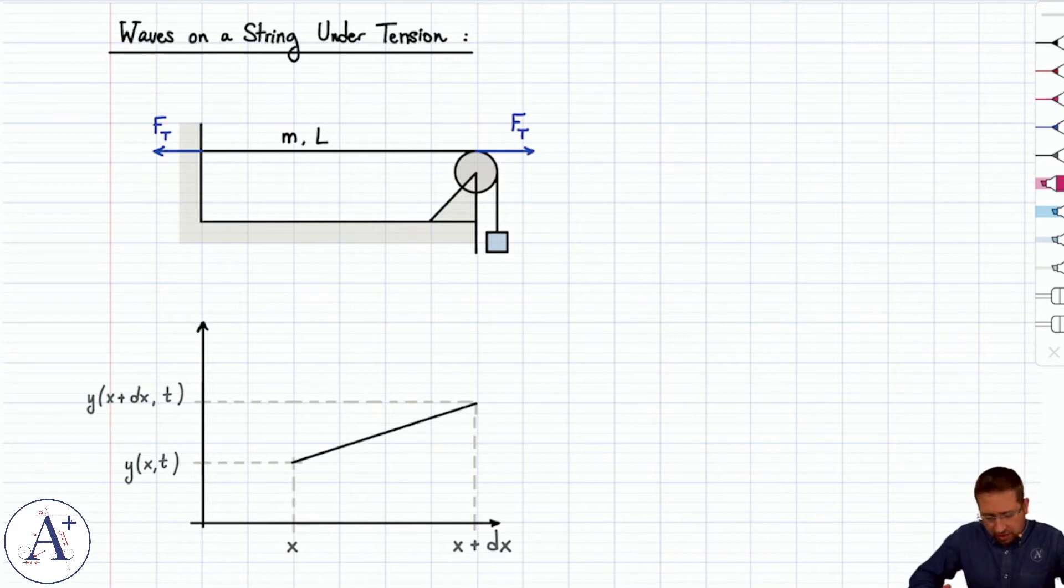We'll do that by taking a string of mass m, length L, and putting it under tension, perhaps by wrapping it over a pulley with mass and anchoring it on the other end. That's one way, it's not the only way, but that works. The point is a string under tension in that manner or another, but it has to be under tension, it can't go slack.